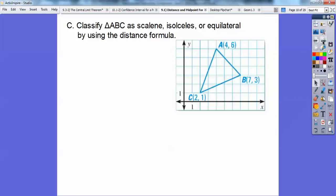Alright, so classify triangle ABC as scalene, isosceles, or equilateral by using the distance formula. So I'm going to use the distance formula between A and B, so here we go, here's distance formula between A and B. I did x sub 2 minus x sub 1 squared plus y sub 2 minus y sub 1 squared, and then I square root all of that right there, so I get square root of 18, which is 2 times 3 times 3, so it's 3 root 2.